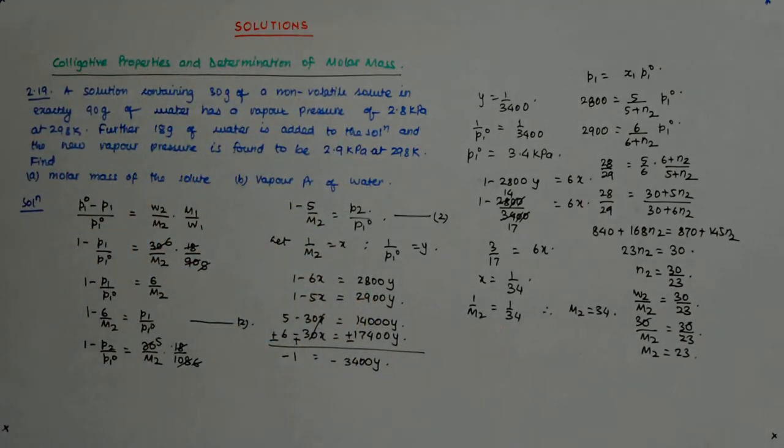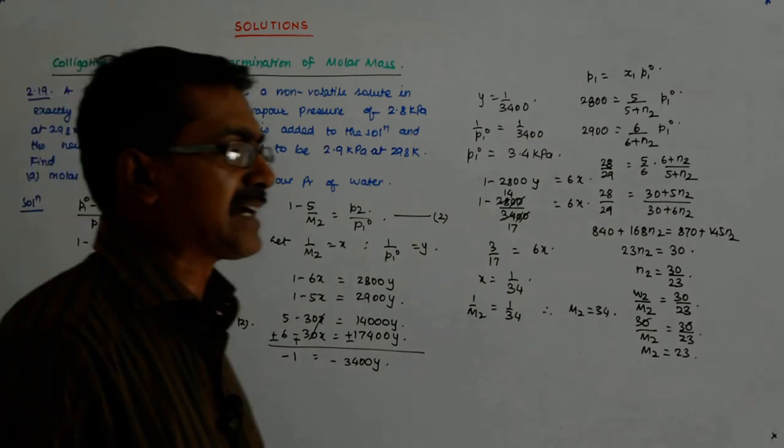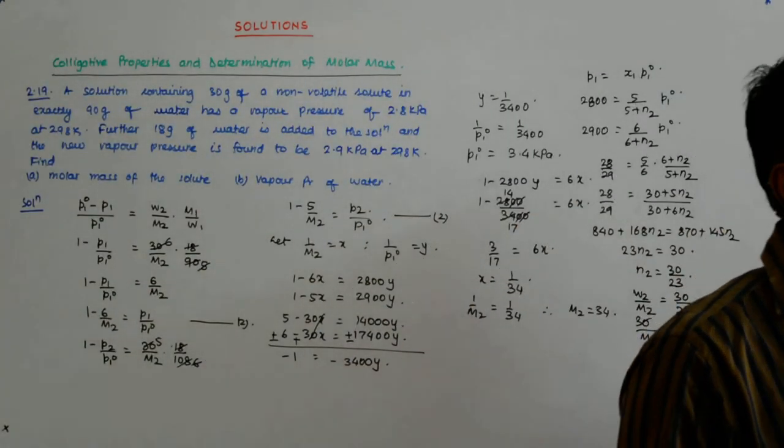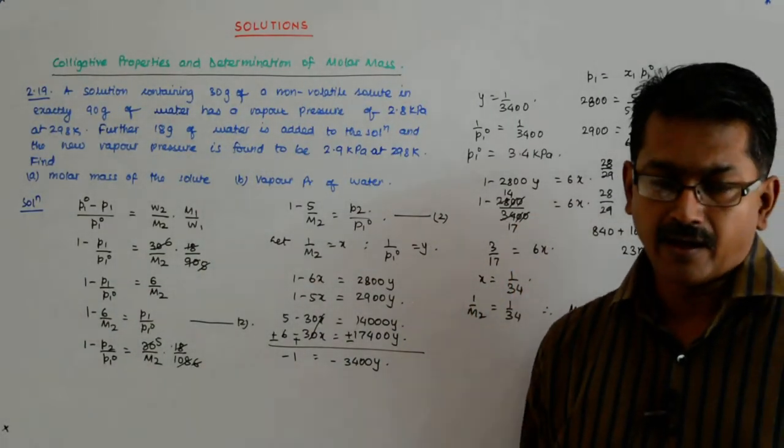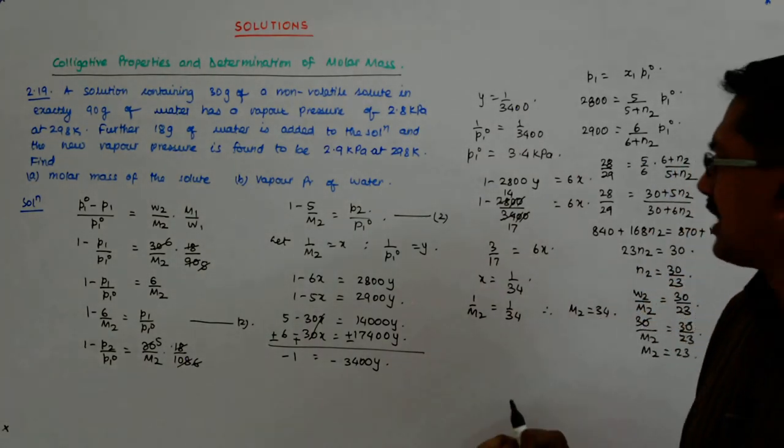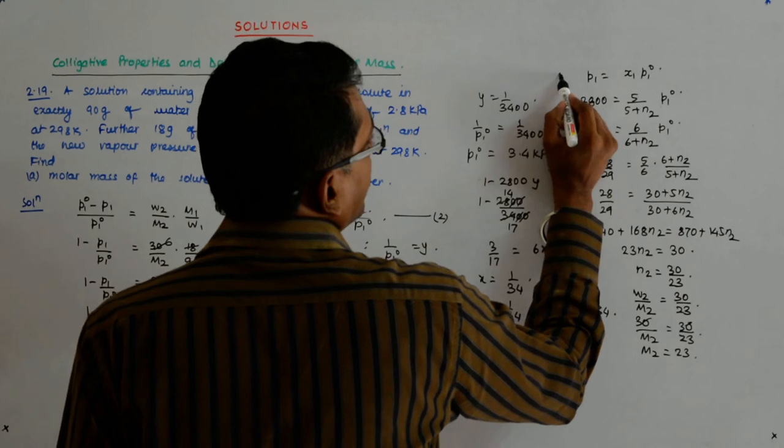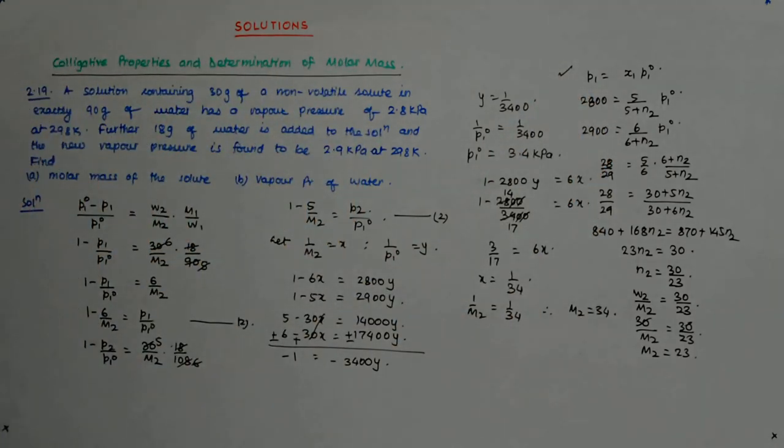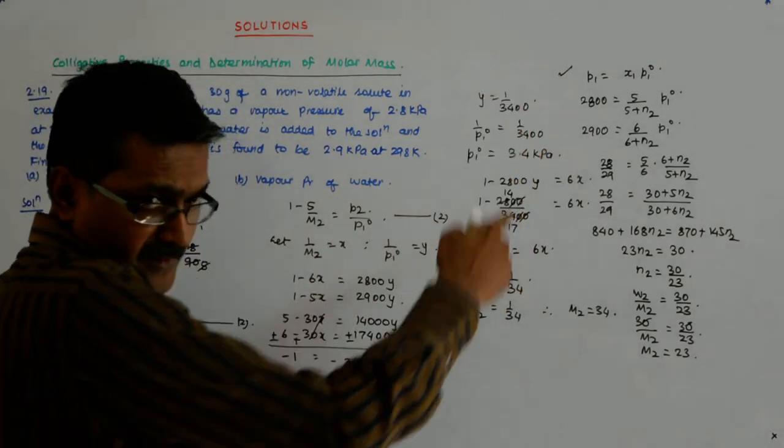You see the difference? Why? That dilution, that's why I had highlighted that, you should be pretty aware that that is a small dilution for which you are doing. Otherwise, the original equation from where we had started to find the relative lowering of the vapor pressure was this, correct?